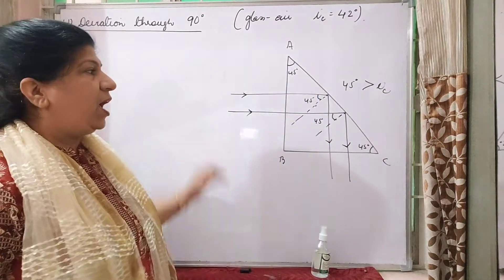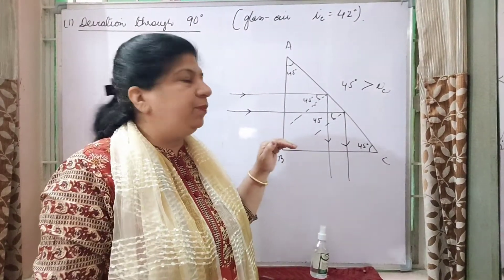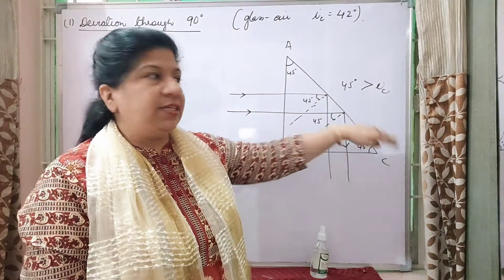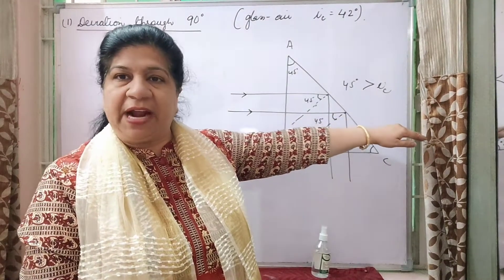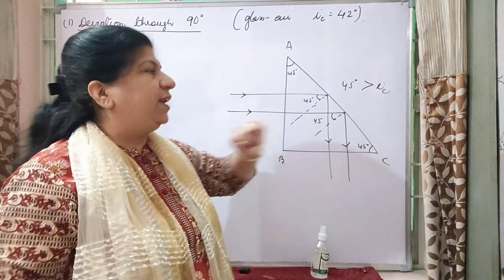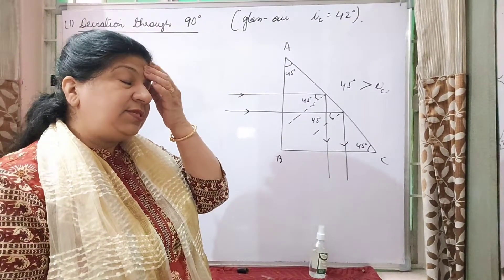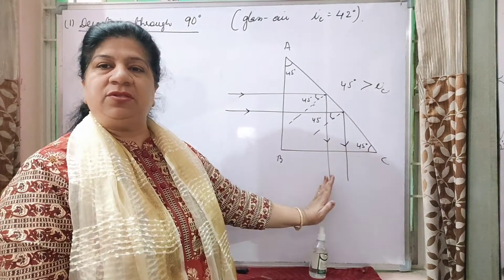The critical angle has to be 42 degree. So this would be 42 degree or this would have been refracted. But because of the property of glass what happens is that it is coming back, that is it is being reflected in the same medium. And here also it is falling perpendicularly so it is going straight.